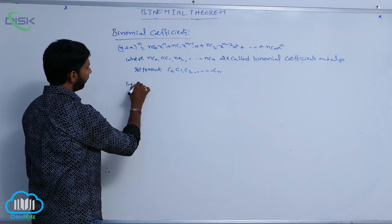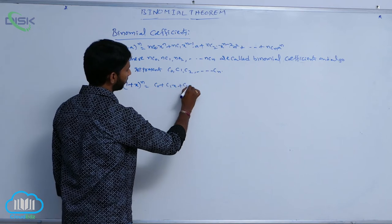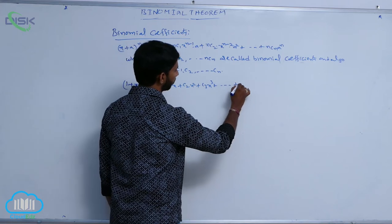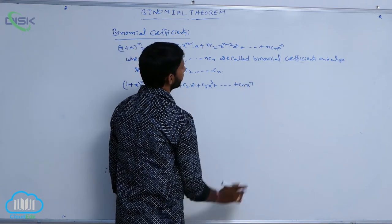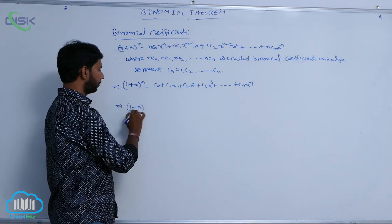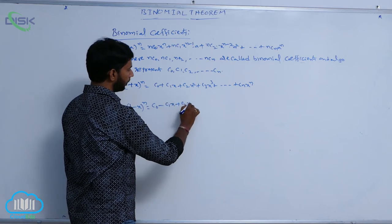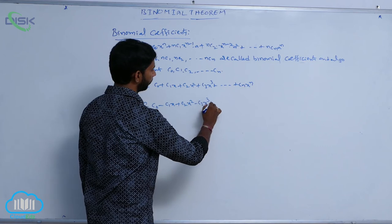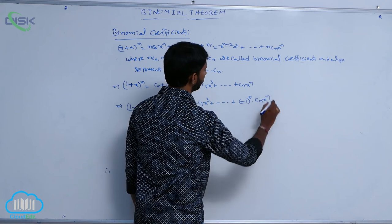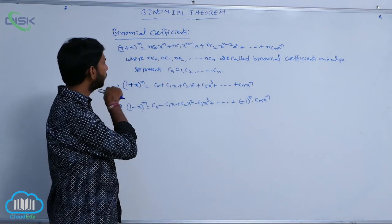Similarly, (1 + x) whole power n is equal to C0 plus C1·x plus C2·x squared plus C3·x cubed plus and so on Cn times x power n. And (1 - x) whole power n is equal to C0 minus C1·x plus C2·x squared minus C3·x cubed plus and so on, plus (-1) power n times Cn times x power n.